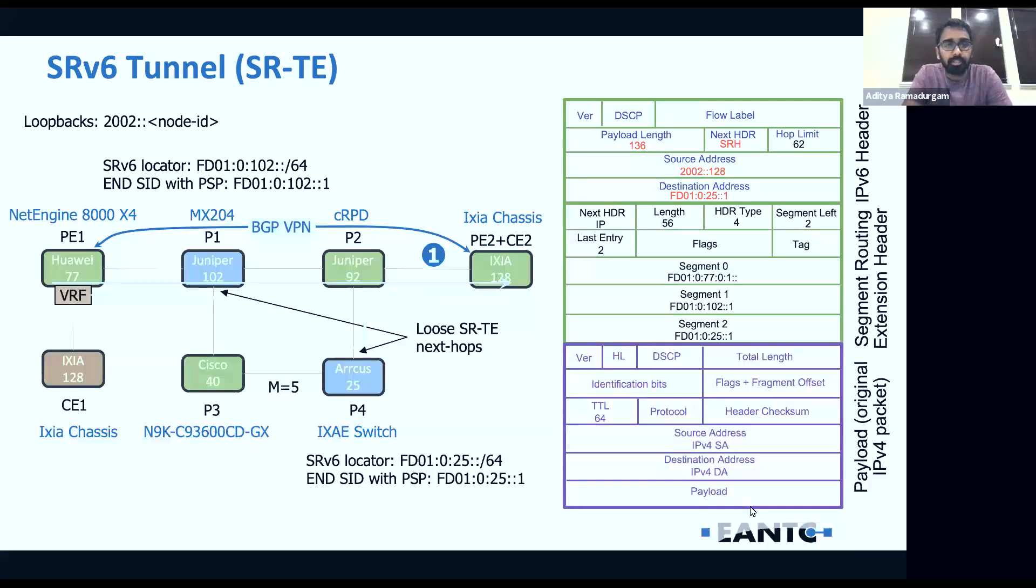Hi guys, my name is Aditya. I'm a customer engineer from Arcus. In this topology, we'll quickly look at the segment routing traffic engineering and how the topology is laid out. We have different vendors performing different functions. We have the Huawei 77 and Ixia 128 doing the PE functionalities, which are doing the BGP VPN v4 with SRv6 extensions. Juniper 102, Juniper 92, Arcus 25, and Cisco 40 are forming the IPv6 core running ISIS as the link state routing protocol with SRv6 extensions enabled.